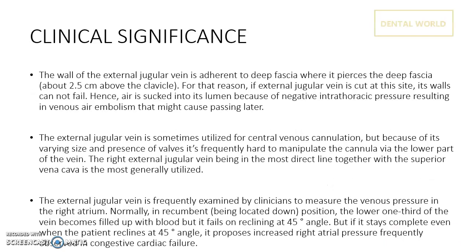This slide covers the clinical significance of the EJV, which is very important. The wall of the EJV is adherent to the deep fascia of the neck where it pierces the deep fascia about 2.5 cm above the clavicle. Because of this, if the EJV is cut at this site its walls cannot collapse. Air is sucked into the lumen because of negative intrathoracic pressure, which results in venous air embolism. This can turn into a very serious or fatal condition because the negative intrathoracic pressure causes suction of air inside the vein.